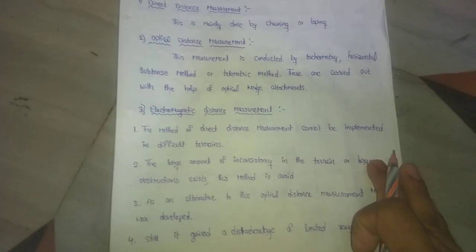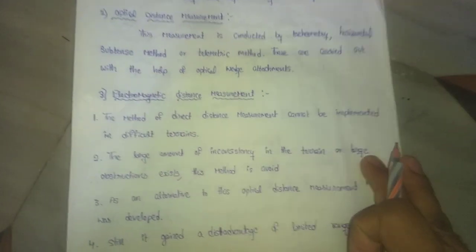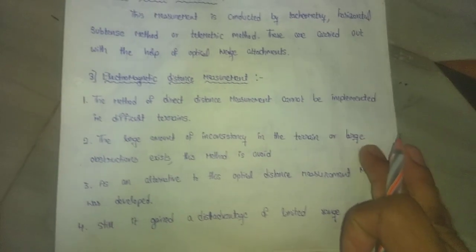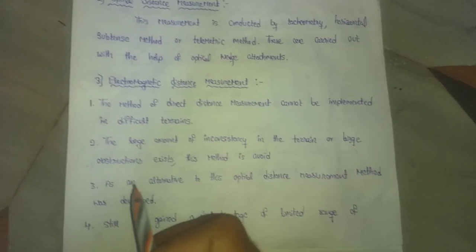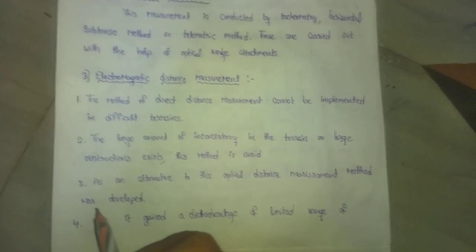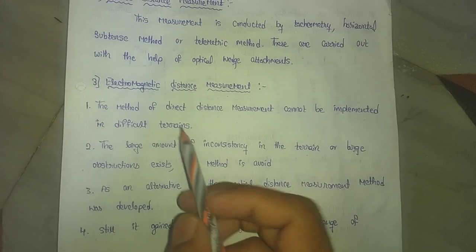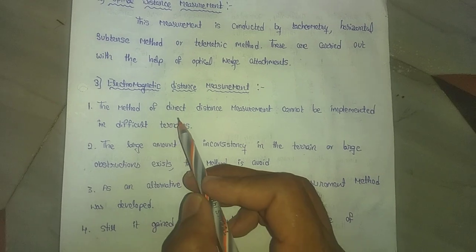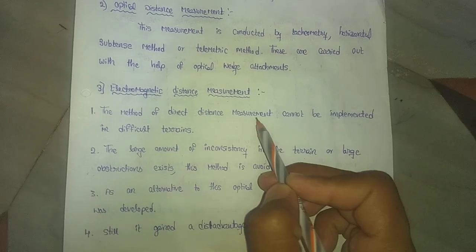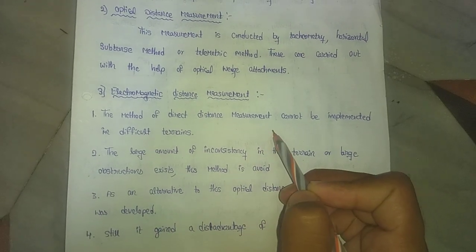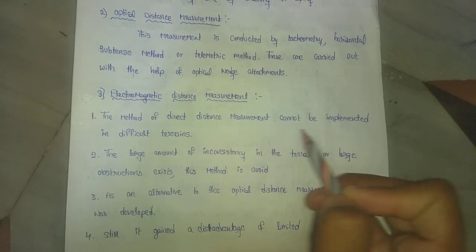The third method is electromagnetic distance measurement. The method of direct distance measurement cannot be implemented in difficult terrains.